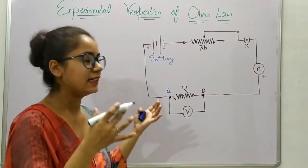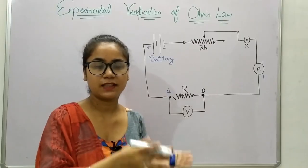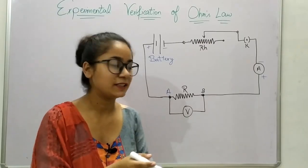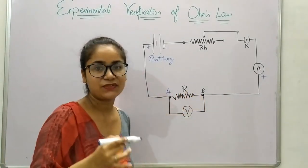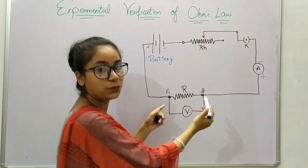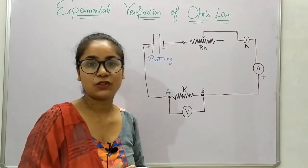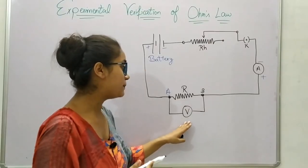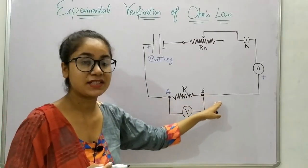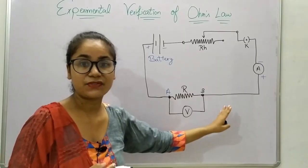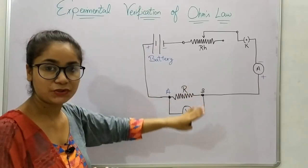Now, resistance is the component that opposes or obstructs the flow of current. The wire AB represents this resistance. Connected across this resistance wire AB, we have a voltmeter. The purpose of the voltmeter is to measure the potential difference across this resistance wire AB.